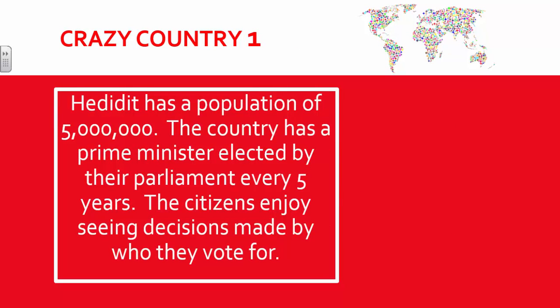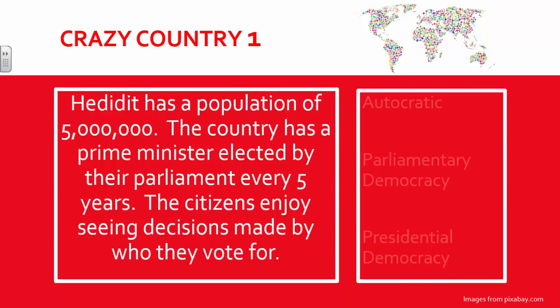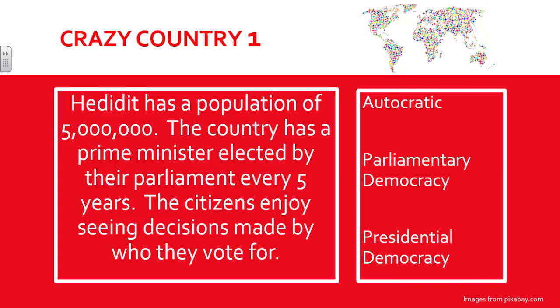Here is an example of a crazy country example. 'He Did It' has a population of five million. The country has a prime minister elected by their parliament every five years. The citizens enjoy seeing decisions made by who they vote for. This would be an example of a parliamentary democracy.